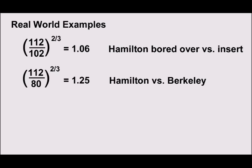So, here's some real-world examples where I'm using the proportionality of the equations to get relative thrust numbers for various pump setups. So, the first example is for my Hamilton 212 pump, with it both bored out slightly and with a nozzle insert. And with it slightly bored out, the diameter is 112 millimeters, and with the insert, it's 102 millimeters. So, you take that ratio to the two-thirds power, and you see 1.06. So, with it bored out, it has 6% more thrust than with the insert.